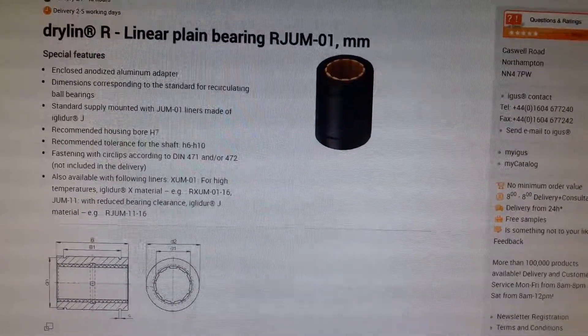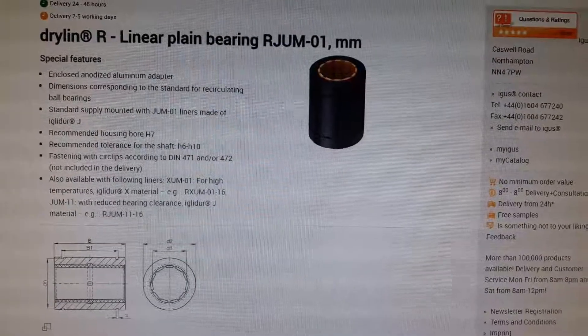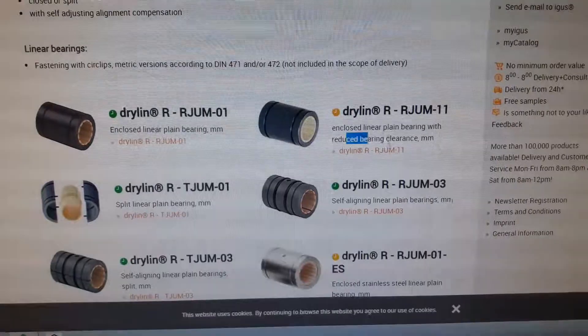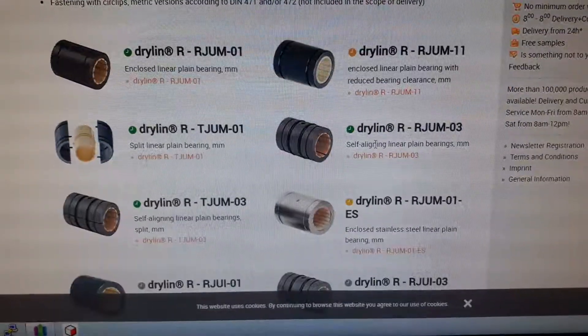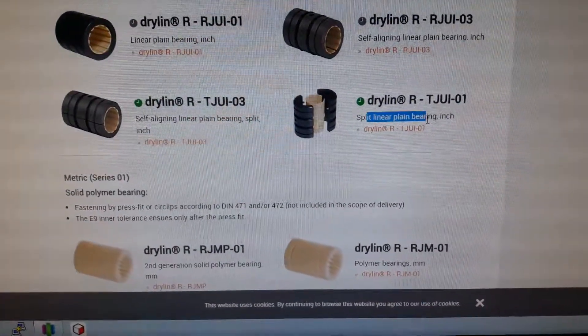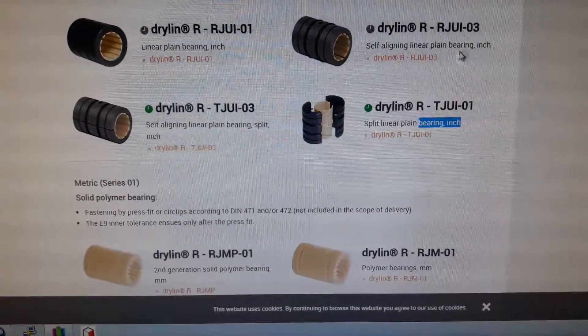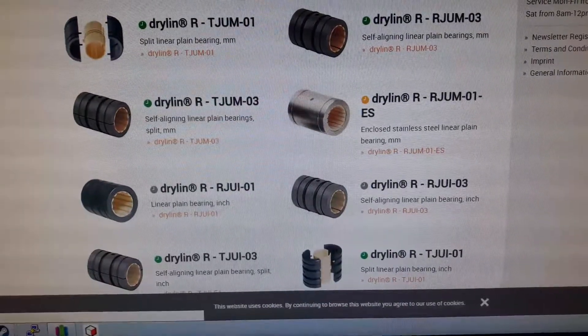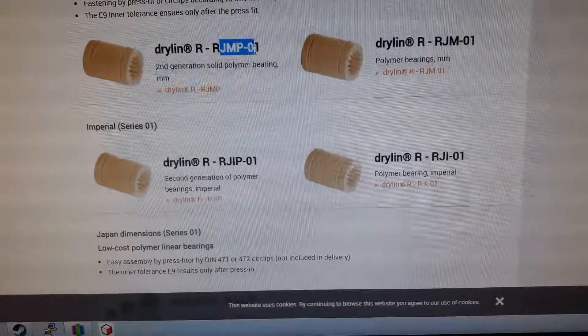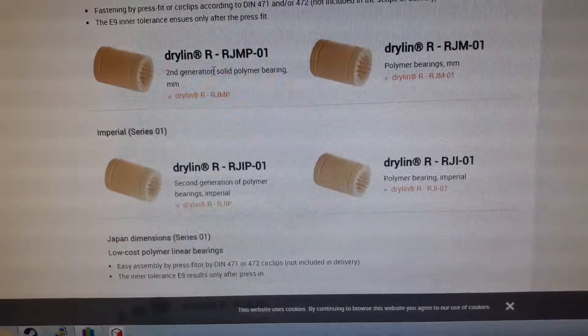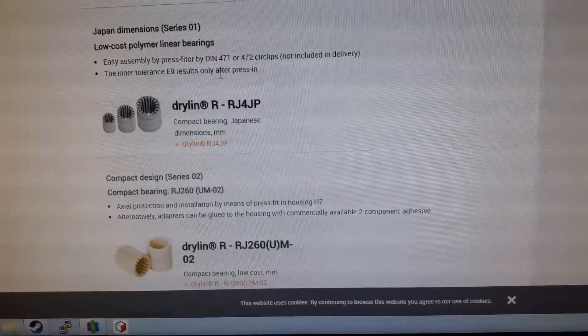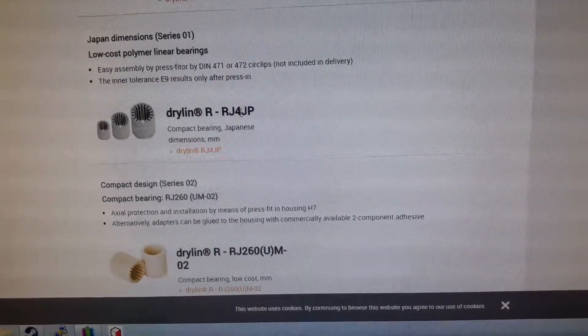Drylin R goes under their plain bearings. As you can see, they have different types. So, reduced clearing, you have self-aligning, split bearings, split plane bearings in inches of course. And you also have the solid RJMP. So this is a higher quality than their low-cost polymer RJ4JP series.